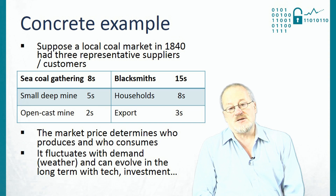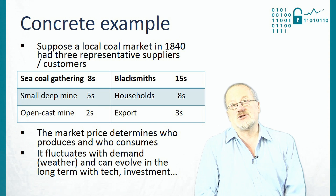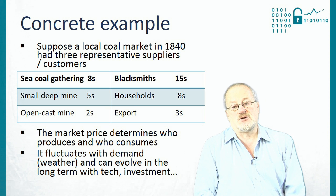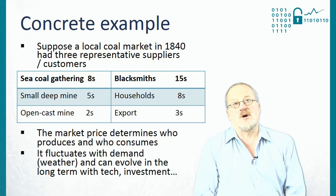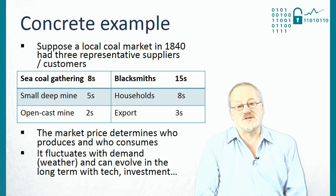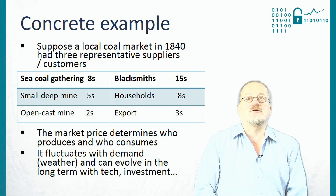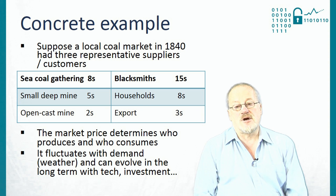On the supply side, you'd have an open-cast mine that might cost two shillings per tonne to operate. Then you might have a small deep mine which costs five shillings a tonne. And then your most high-cost supplier might be people who go out onto the beach with baskets and collect coal washed in by the sea from underground seams, but they wouldn't do that unless they could get eight shillings a tonne in return for their labour.